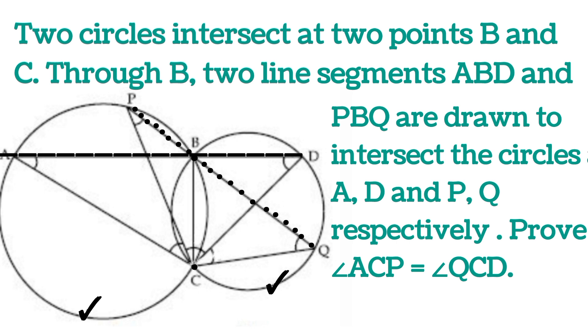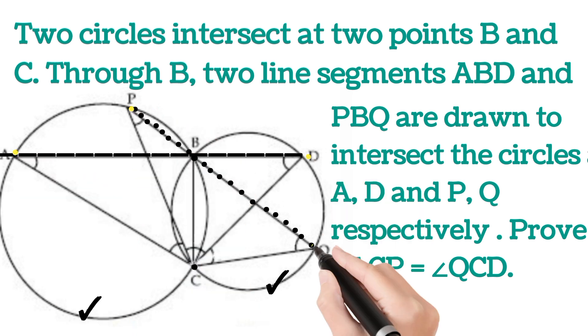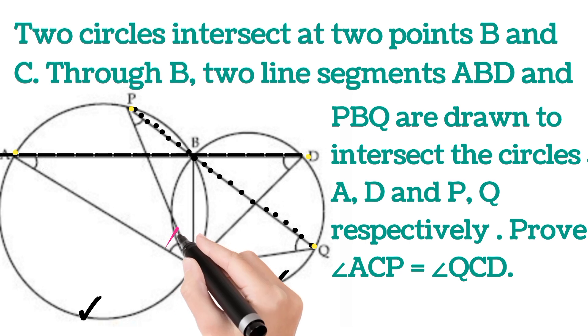These lines intersect the circles at A, B, P, Q respectively. Then prove that angle ACP is equal to angle QCD.